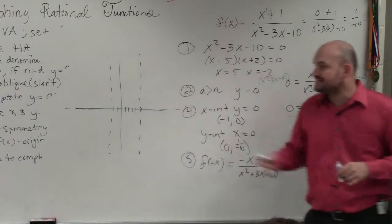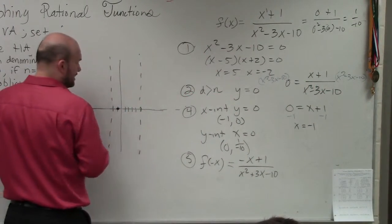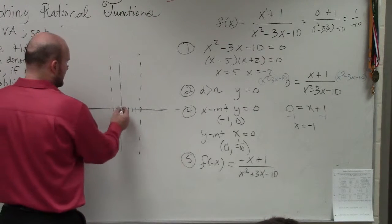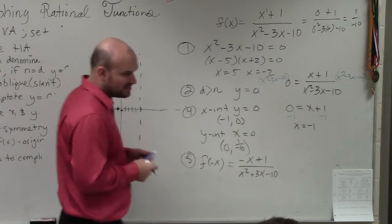And then number six is going to be pick points. Now, we know that there's already two points. We know one point is negative 1, 0. And we know the other point is 1, 0, negative 1, 10. We need to figure out what the other two points are.